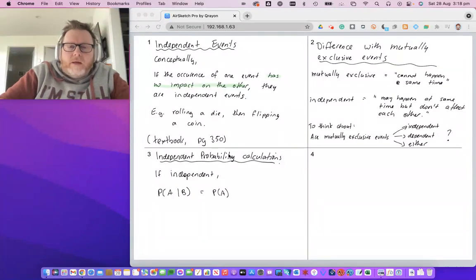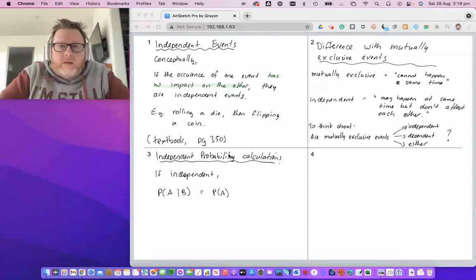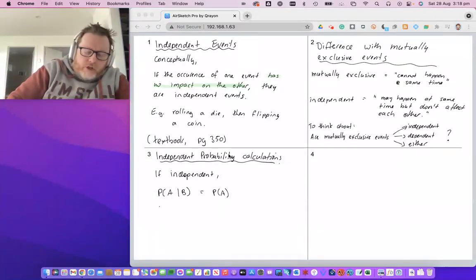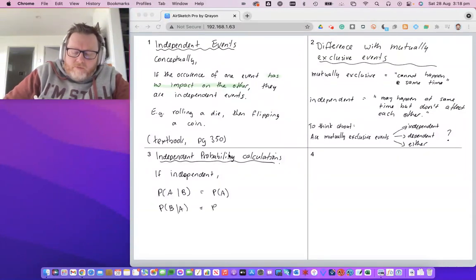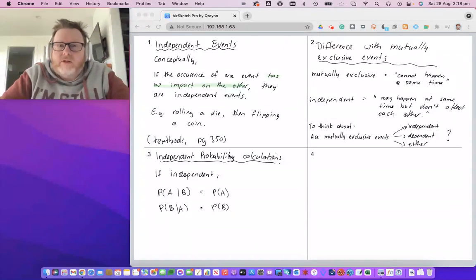In other words, it doesn't matter what's happening with B, probability of A remains unfazed. This would be probability of B - A and B are just two events, so that's important to note.